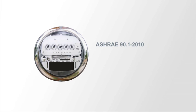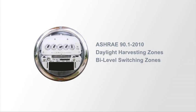The other thing that's driving so much of our market are energy codes. Right now, the next version of energy code that will be mandated will be ASHRAE 90.1 2010. That particular code is going to demand daylight harvesting zones, bi-level switching zones, and manual-on zones. Things that we've seen in California and elsewhere are now being employed or are going to be taken up by other states.